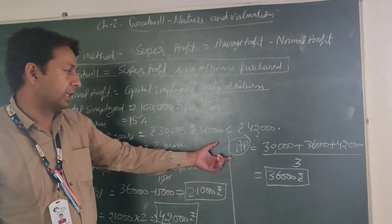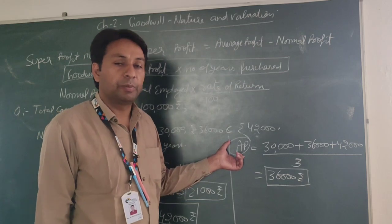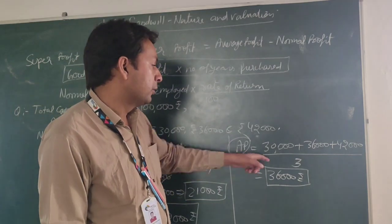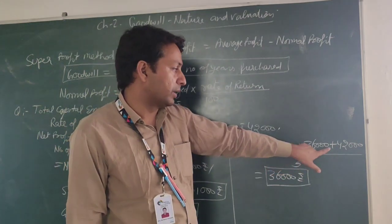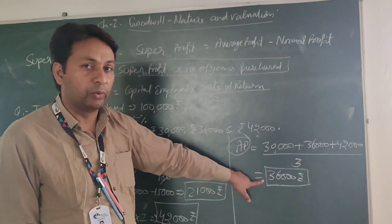So we have to calculate average profit. This formula is known. Average profit means total of profit divided by number of years. So total 30 plus 36, 42 divided by 3 years and average profit is going to be 36,000.